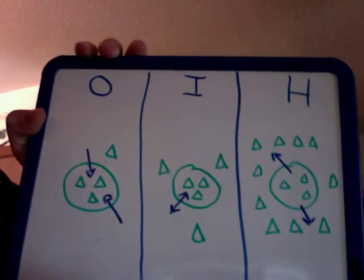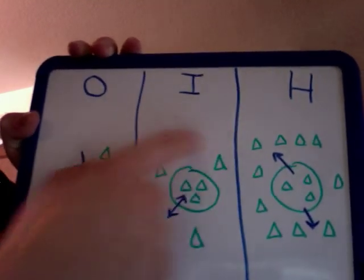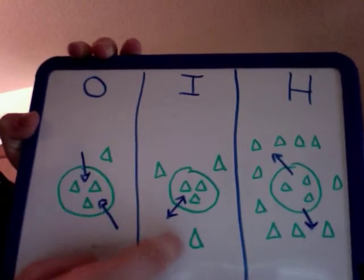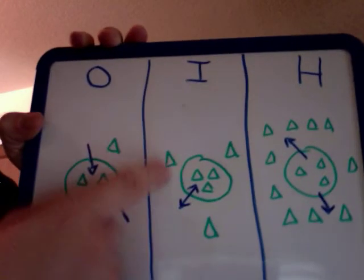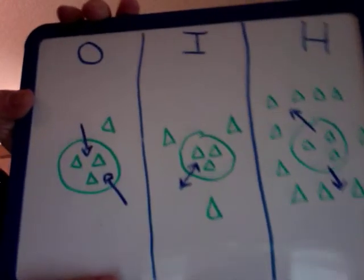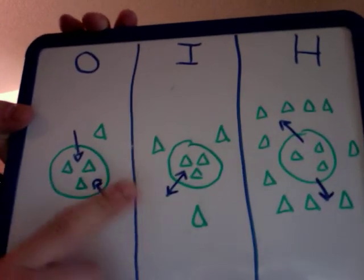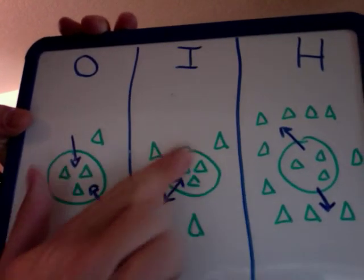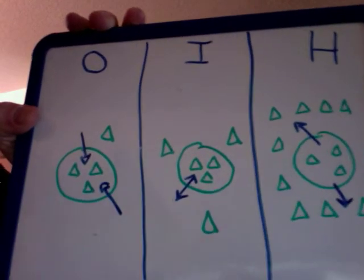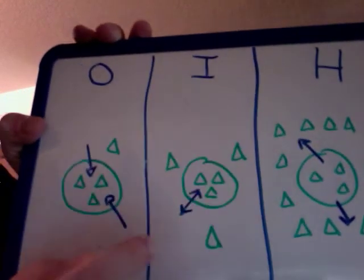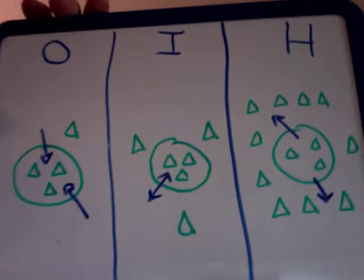An isotonic solution has the same tonicity inside and outside the cell — for example, three solute particles outside and three inside. That means the amount of water going into the cell is equal to the amount going out, so there is no net gain or loss of fluids shifting in and out of the cell.